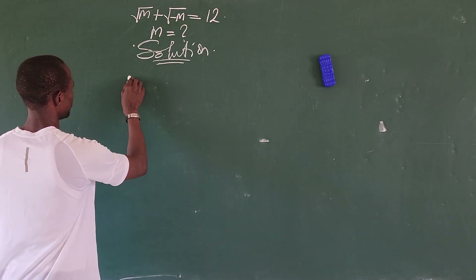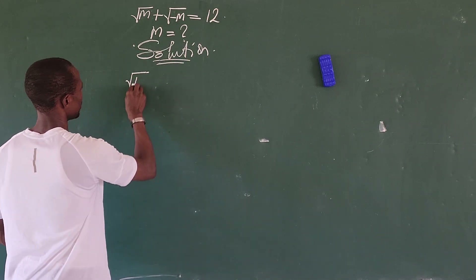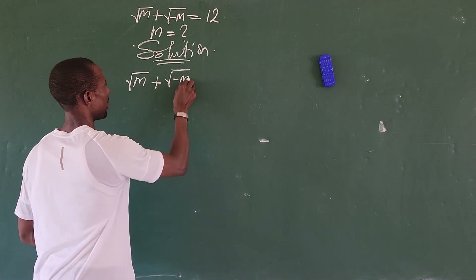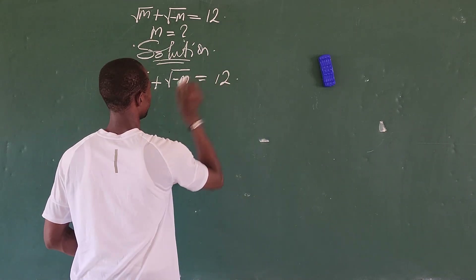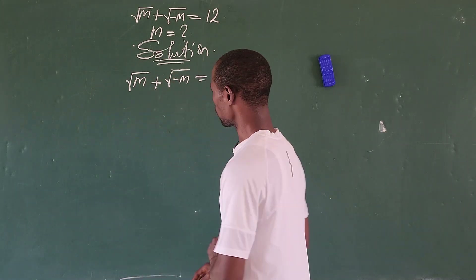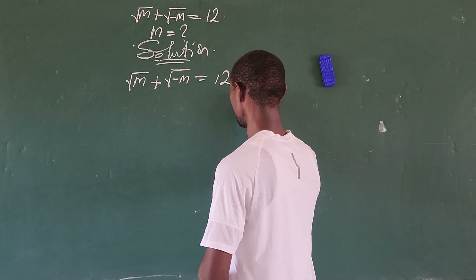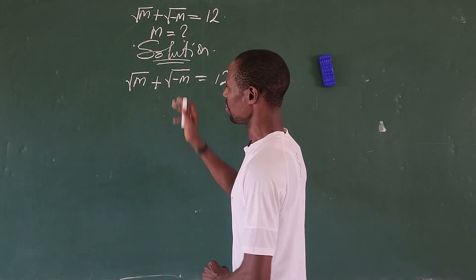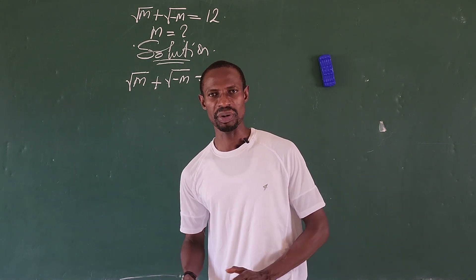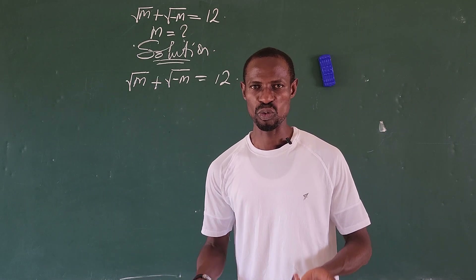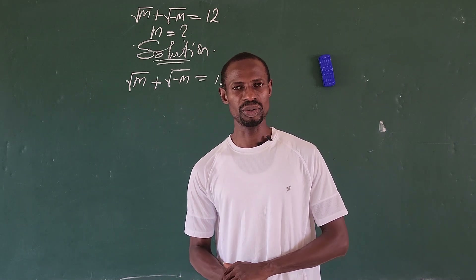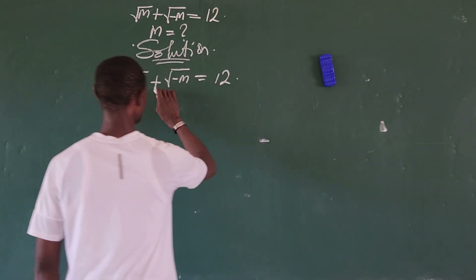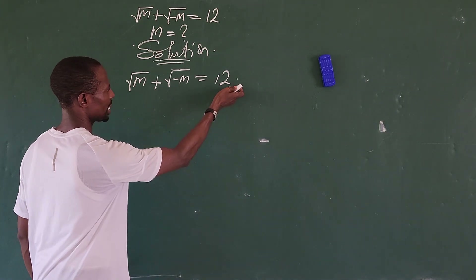Let's put down the question. We have the square root of m plus the square root of minus m equals 12. In the previous approach, I moved one quantity to the other side of the equation before squaring both sides. Now, this is a radical — a square root radical — so we take the square to eliminate it.